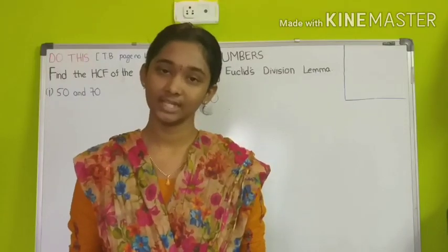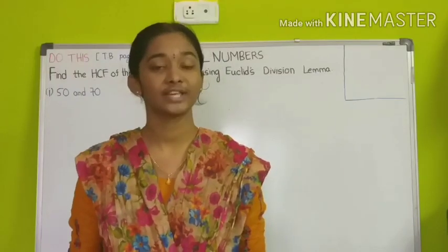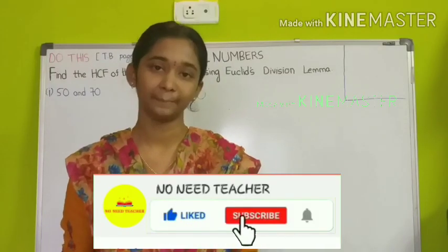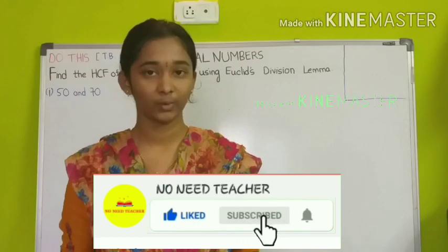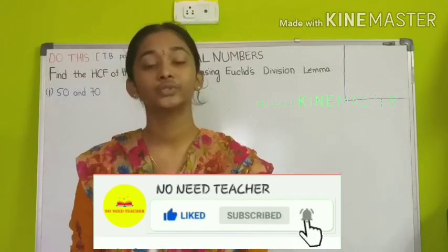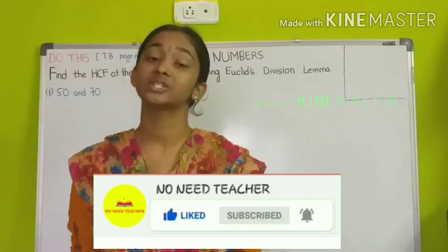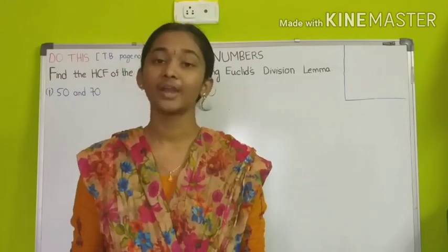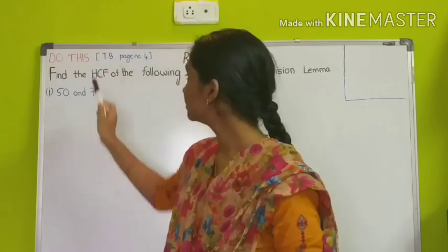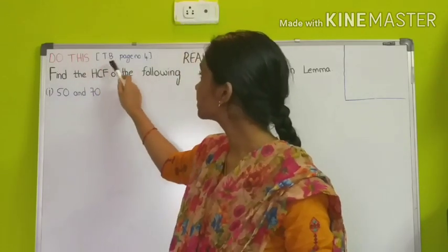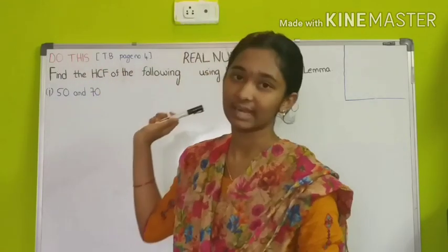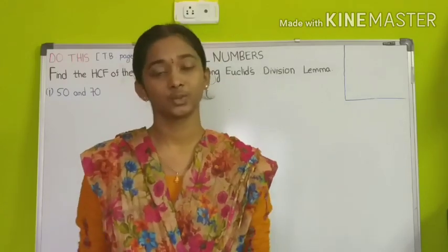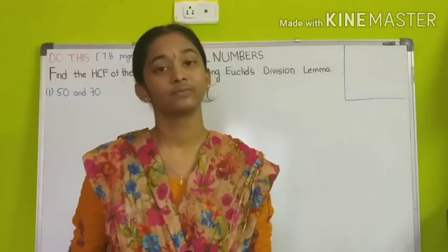In this video, which is part 6 of Class 10 Mathematics first chapter, Real Numbers, we are going to learn how to find the HCF of two or more numbers using Euclid's division lemma, and also solve some problems given in 'Do This' in the textbook page number 4. To start with, we need to know what HCF is.